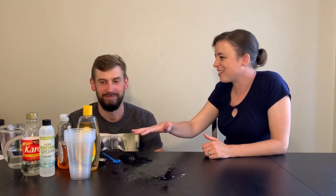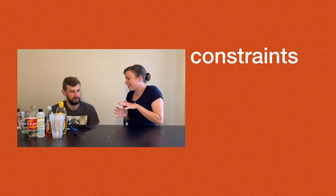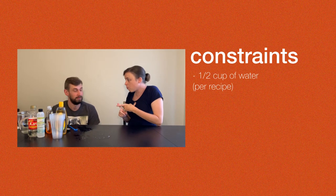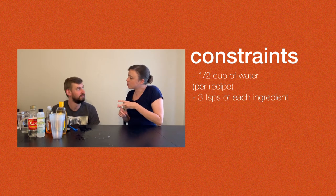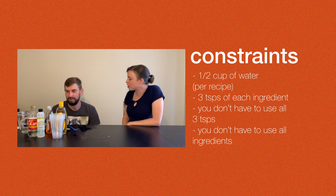Now that we've tested our ingredients to see how they affect bubble properties, it's time for you to make your very own bubble recipes. Your goal today is to make a bubble recipe that creates bubbles that last as long as possible. Constraints are limitations that you have to work within. You can use half a cup of water per recipe and up to three teaspoons of each of our ingredients. You don't have to use all three teaspoons and you don't have to use all of your ingredients. It's important to let your child create whatever recipes they want, even if it's one you know won't work so well. Use questions to help your child make observations about what is working well and what is not, and encourage them to redesign to make their recipes even better.